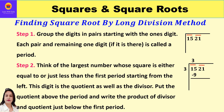Suppose we take a number, let's say 1521. We have to find its square root by long division method. There are various steps involved. The first step says: group the digits in pairs starting with the ones digit. The ones digit is 1, so we start from here — 21 is the first pair, and 15 is the second pair.